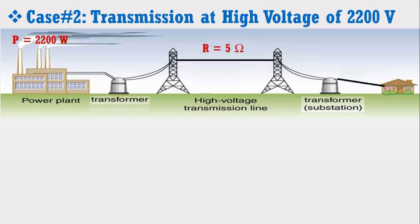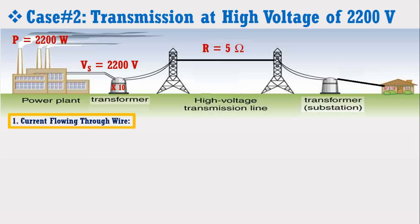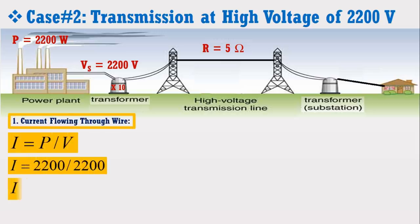For simplification, we just increase the voltage by 10 times, from 220 volt to 2200 volt. Now by putting this voltage magnitude in the current formula, we observe that in this condition only 1 ampere of current is flowing in the transmission line. It means that when the transmission is carried out at high voltage, the current in the line is reduced.